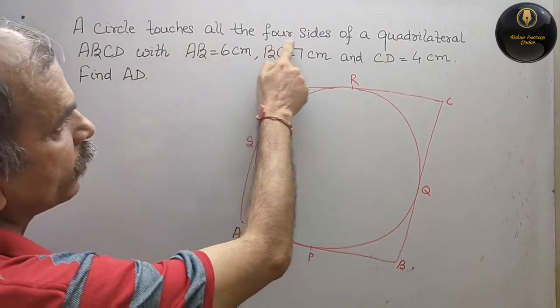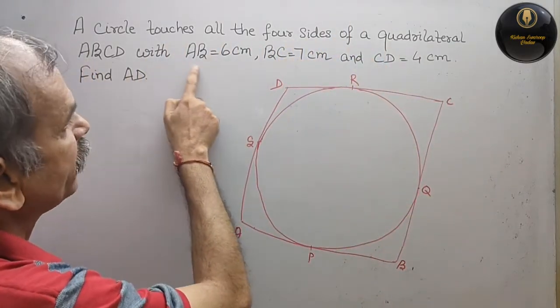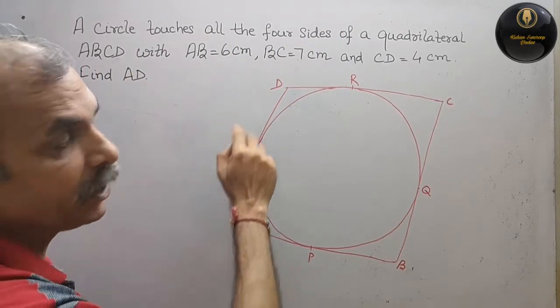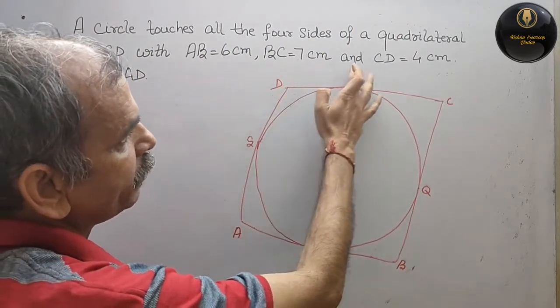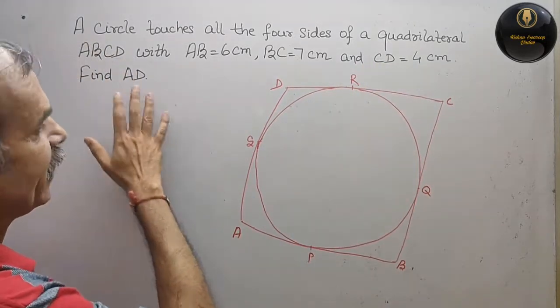A circle touches all the four sides of a quadrilateral ABCD with AB is equal to 6 cm, BC is equal to 7 cm and CD is equal to 4 cm. Find AD.